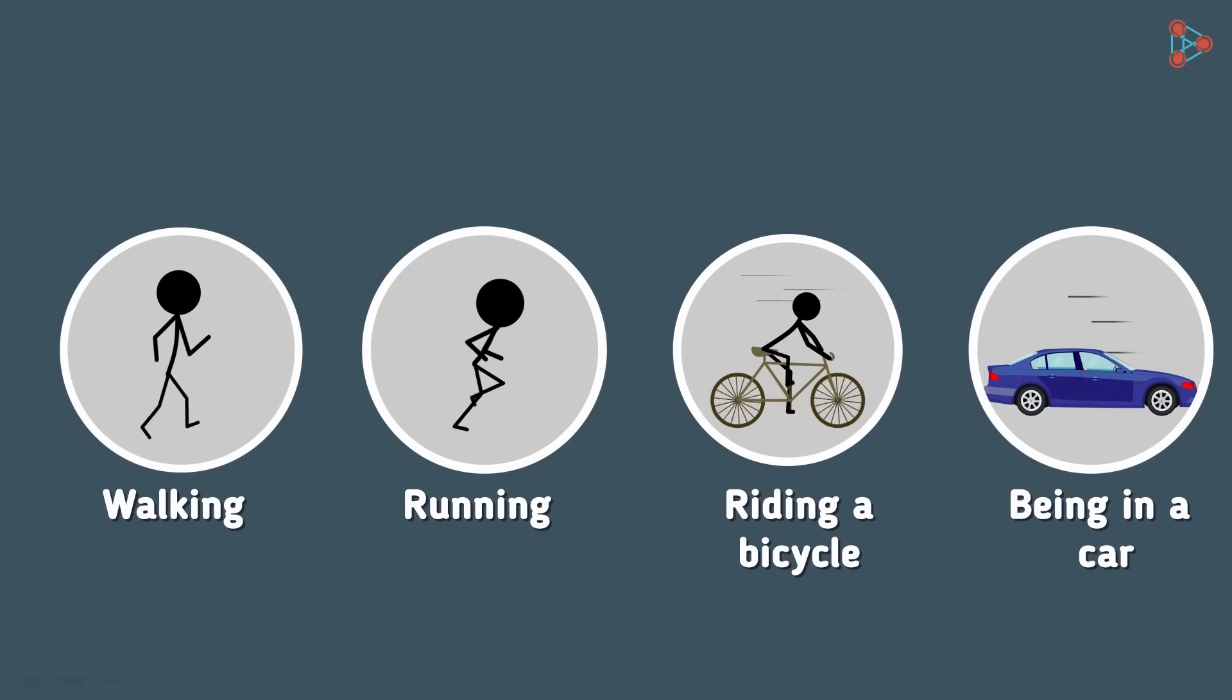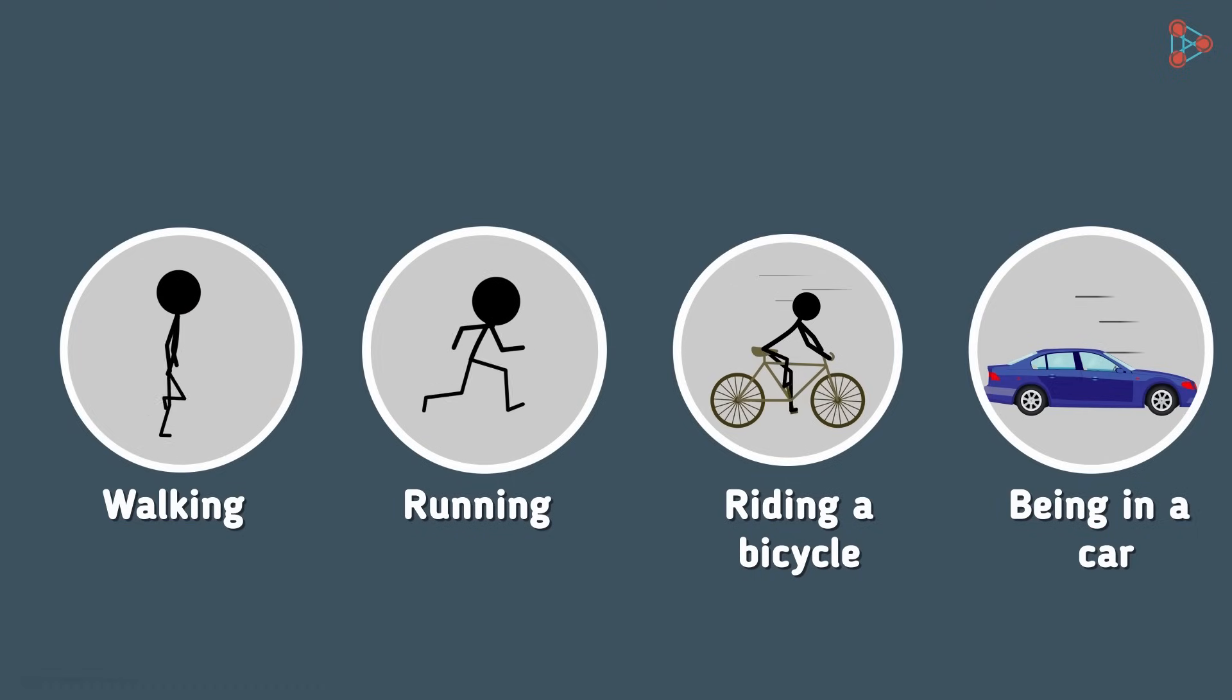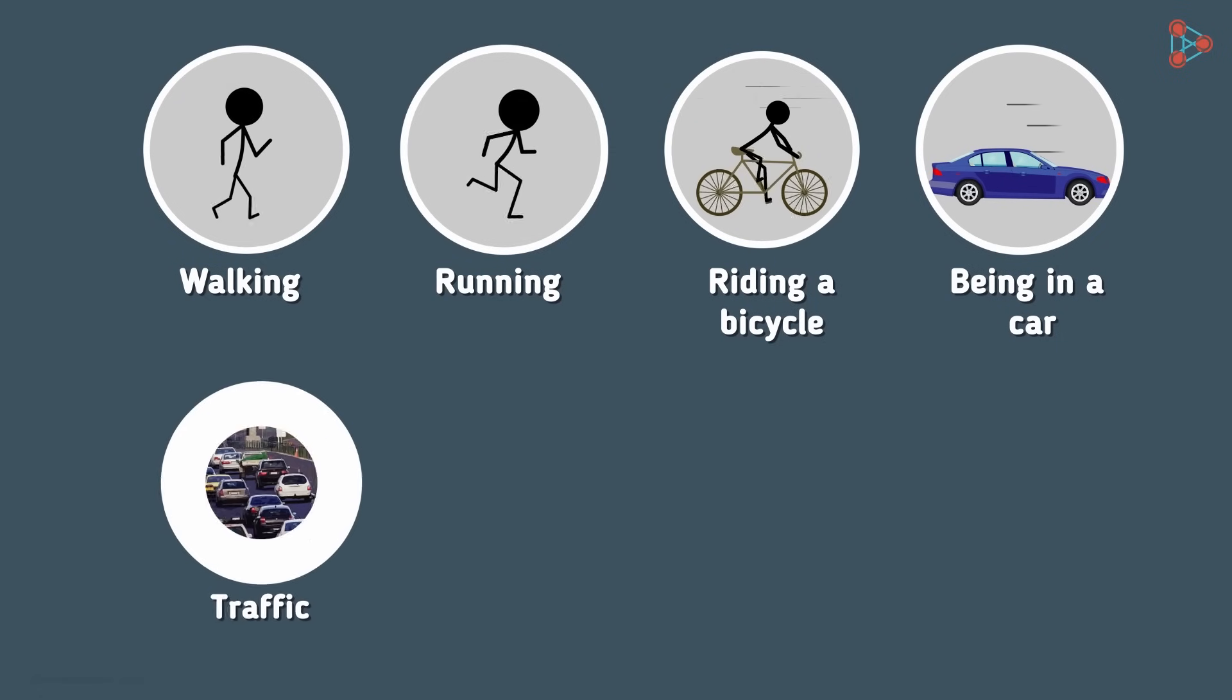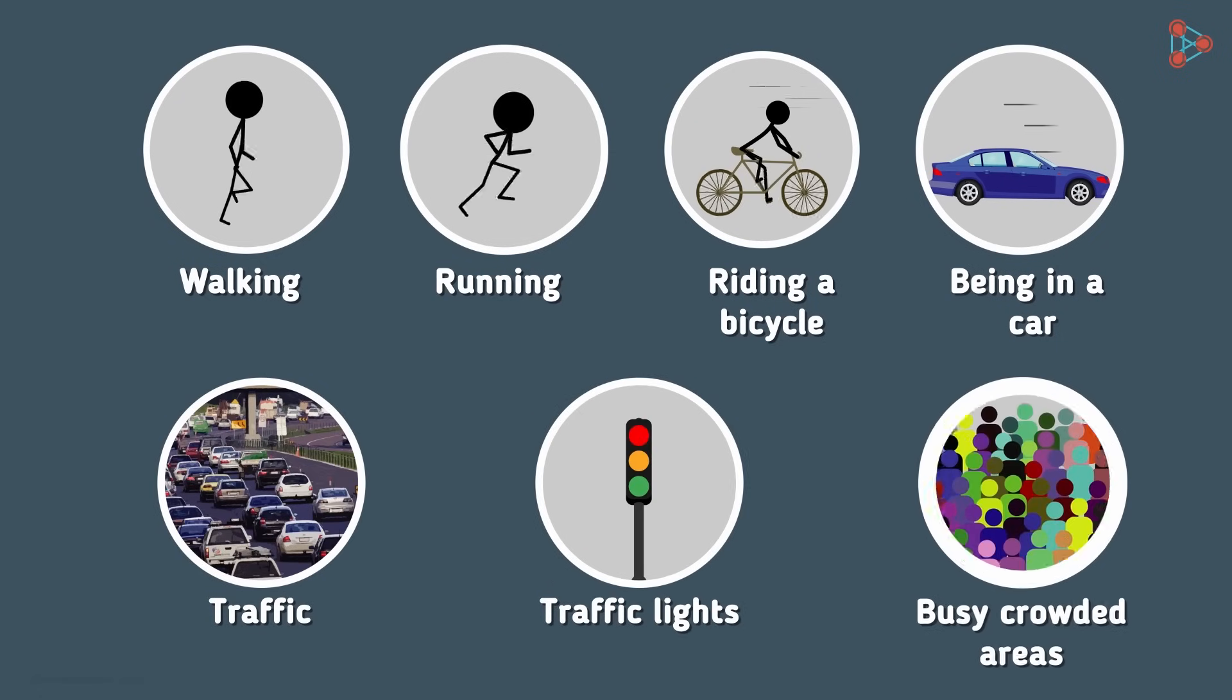Most of the times we are not even in control of the speed. There are external factors like traffic, traffic lights, busy crowded areas and the like. The bicycle ride is fast at times and slow at other times depending on which area of the school you are in. Same goes for driving a car.